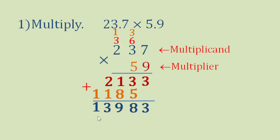Now how about the decimal point? Let's look at the original numbers we had. 23.7 has 1 decimal place, and also 5.9 has 1 decimal place.